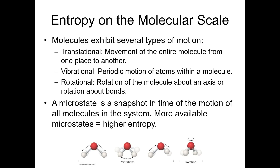Let's talk about movement and microstates. If we think about a molecule, there are many different ways in which it can move. It can vibrate — bonds changing their lengths or bond angles vibrating. A molecule can rotate on basically any axis. And it can move translationally from one side to another. A microstate is a snapshot in time of a whole system, looking at the motion of all molecules in that system. The more microstates available to a system, the higher the entropy.